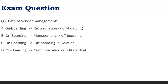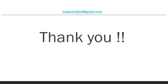The last exam question: what is the path of vendor management? We have seen it is onboarding, management, and operating. This is easy once you know it, but in the exam if options come with alternatives like onboarding/reconsideration or onboarding/communication, it can be difficult. The correct answer is onboarding, management, and operating. That's all for today — hope you found the video informative and helpful. Please like and subscribe for more updates. Thank you, bye!